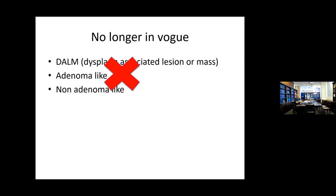What's no longer in vogue — and the problem in medicine is yesterday's dogma is today's heresy — is the DALM: dysplasia-associated lesion or mass, adenoma-like or non-adenoma-like. We don't use that when we talk about adenomas or lesions in ulcerative colitis any longer.